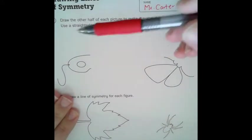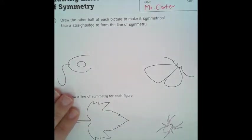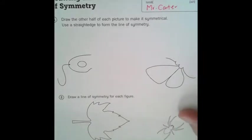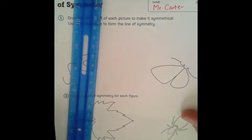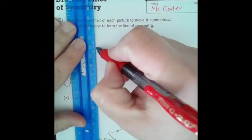So the directions are saying to draw the other half of the picture to make it symmetrical. Use a straight edge to form the line of symmetry. So I'm going to grab my straight edge here. The line of symmetry for number 1 over here will look like this.